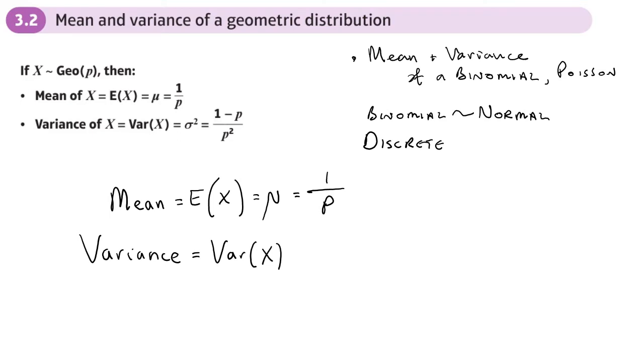And the discrete probability distribution or discrete random variables? So variance, that's the symbol that we use, σ², and that is probability of failure over success squared. Now there is a table in the formula book, I think on page 23, that gives you the mean and variances for all of these different distributions.